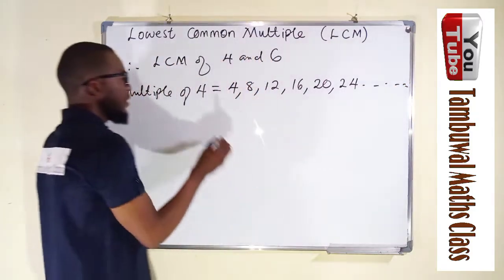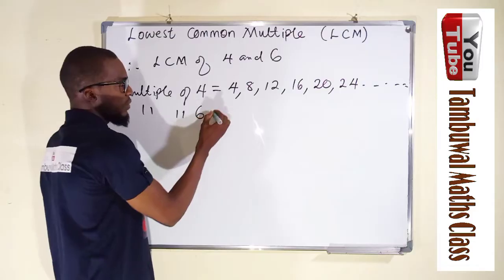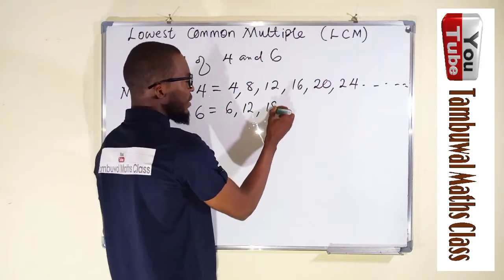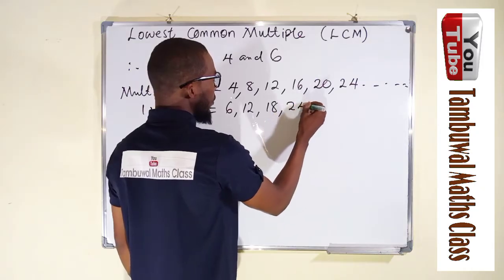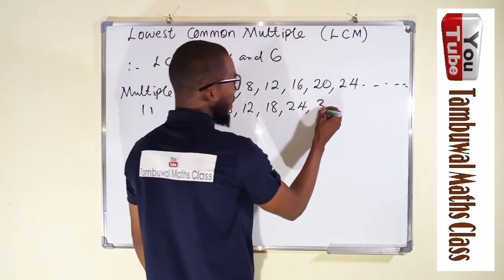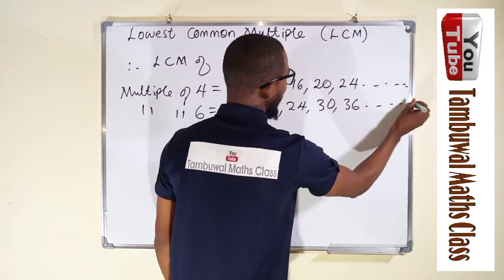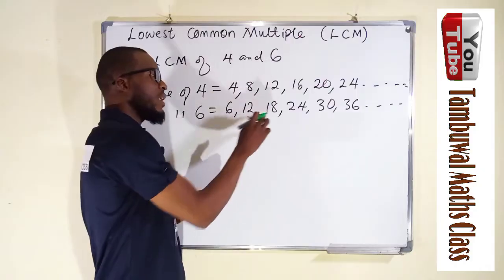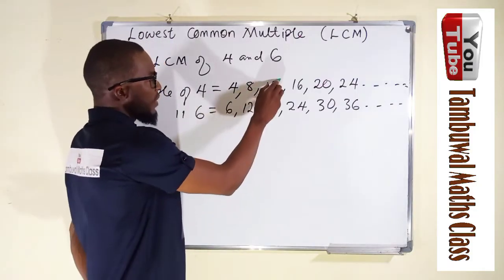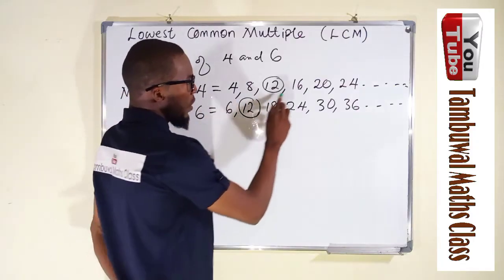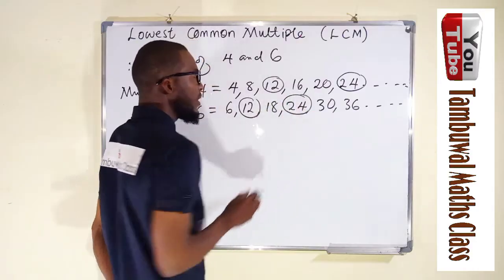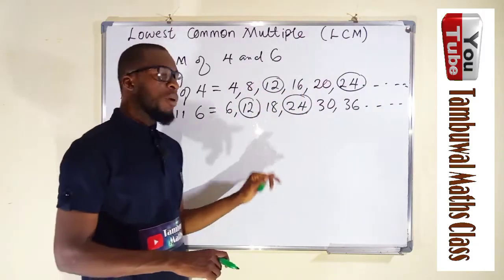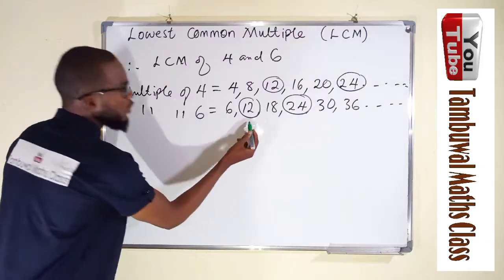Now for six: six times one is six, six times two is twelve, six times three is eighteen, six times four is twenty-four, six times five is thirty, six times six is thirty-six. We stop here. Looking at the common multiples that appear in both lists, we can see twelve and twenty-four. The common multiples between four and six are twelve and twenty-four.